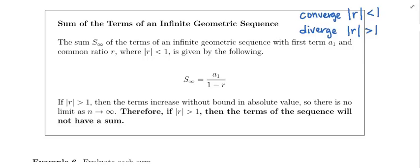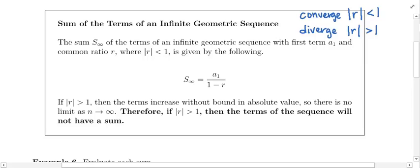That statement is reminding us that if you are dealing with an infinite geometric series, it is going to converge — you are going to be able to add it up to a single number — as long as the absolute value of the common ratio is less than 1. To get the sum, all you have to do is apply this formula: take the first term and divide it by 1 minus the common ratio.